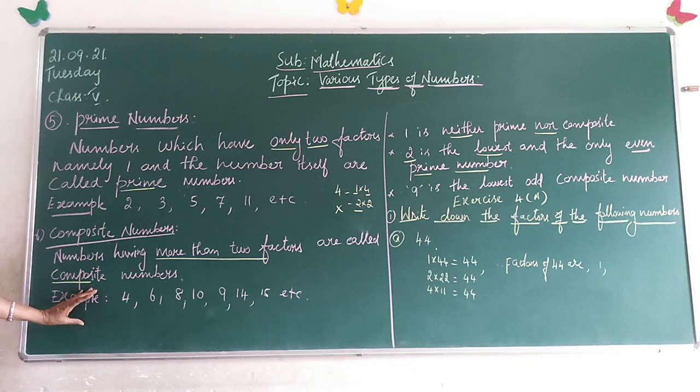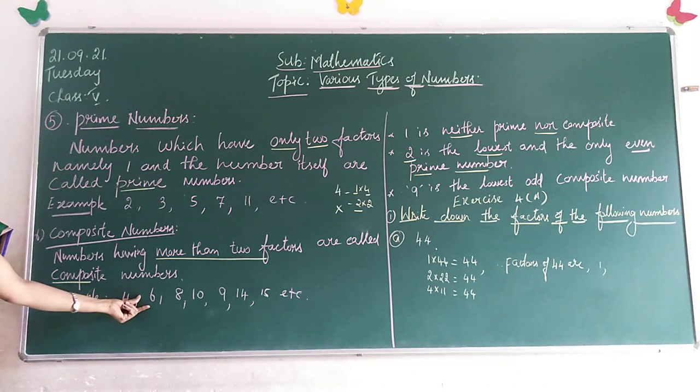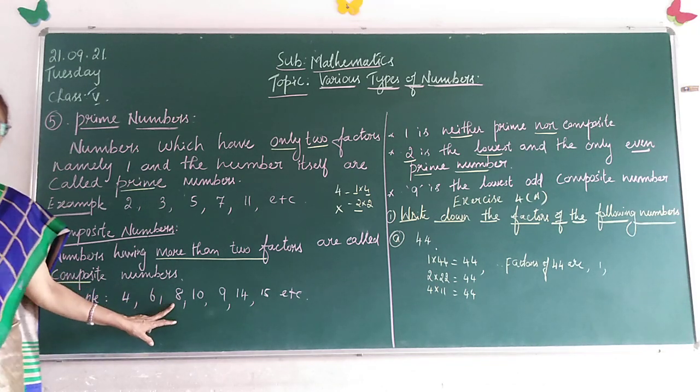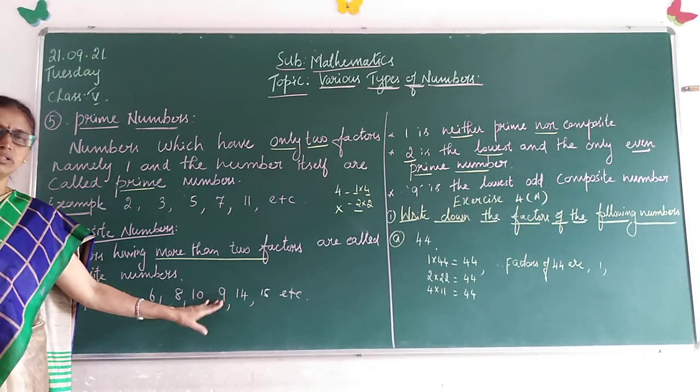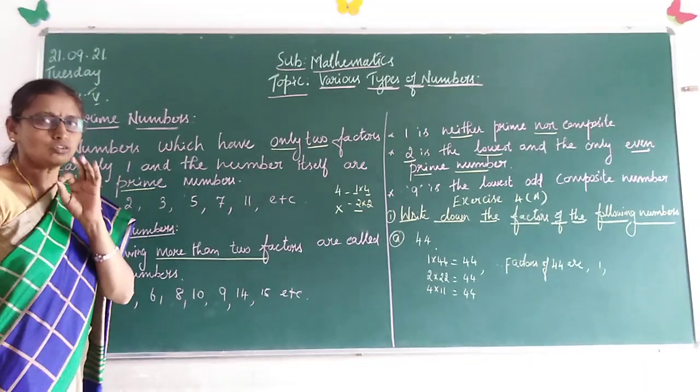What about examples, children? See, 4 is a composite number. 6 is a composite number. 8 is a composite number. 10 is a composite number. 9 is also a composite number. They have more than two factors.